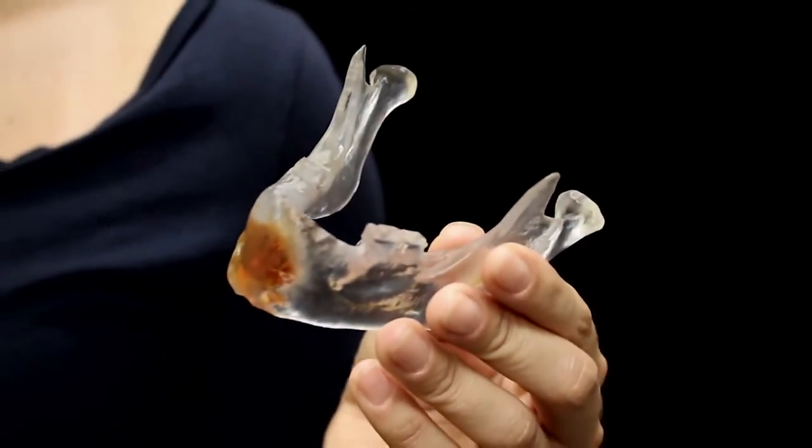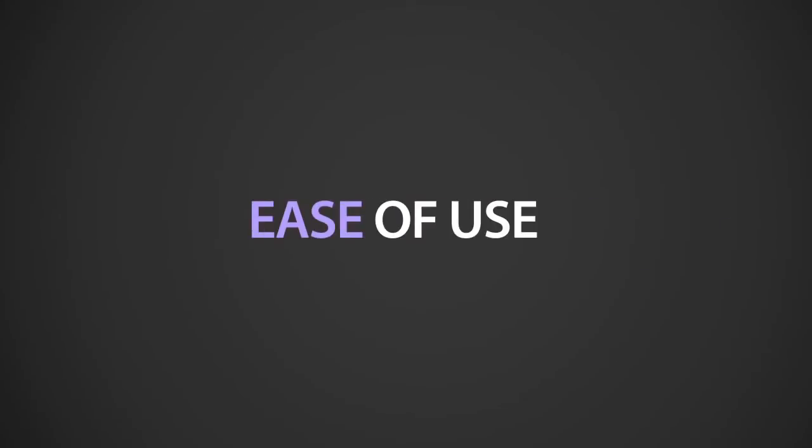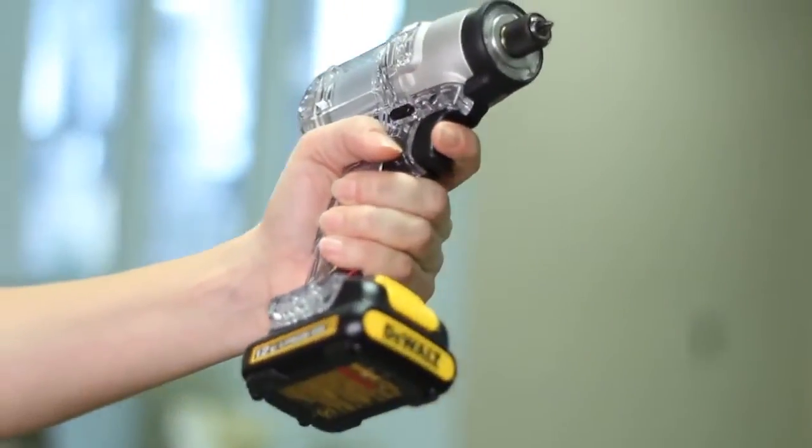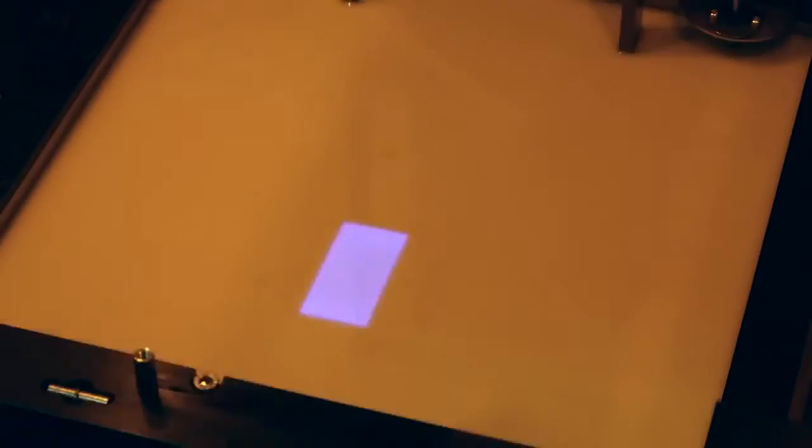With the ProJet 6000 and 7000, I can create highly detailed, realistic medical education models. With a convenient touchscreen interface and a simple top-change material station, it's easy to print prototypes or functional parts and take advantage of the unparalleled material choices the 6000 and 7000 have to offer.